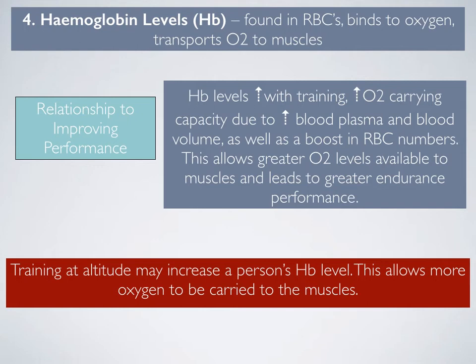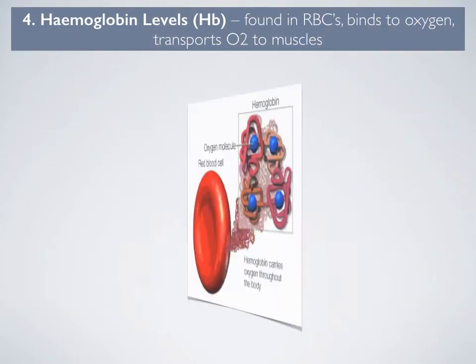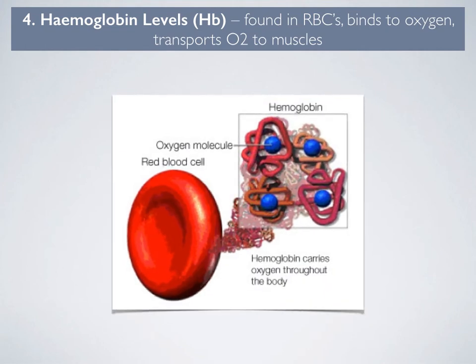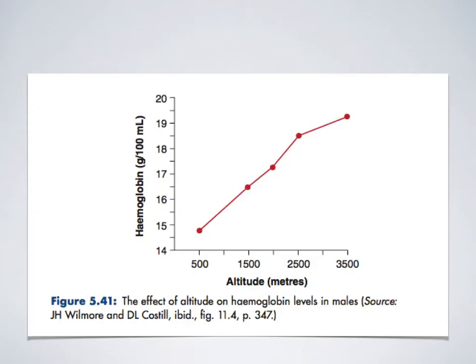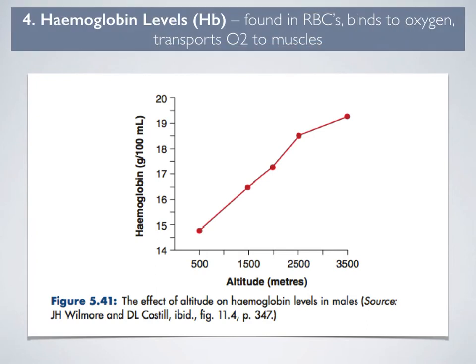Training at altitude can also increase the amount of hemoglobin available to the athlete in the blood. You can see in this image that the hemoglobin attaches to the red blood cells and transports the oxygen. This graph shows that as altitude increases, the amount of hemoglobin produced by the body also increases.